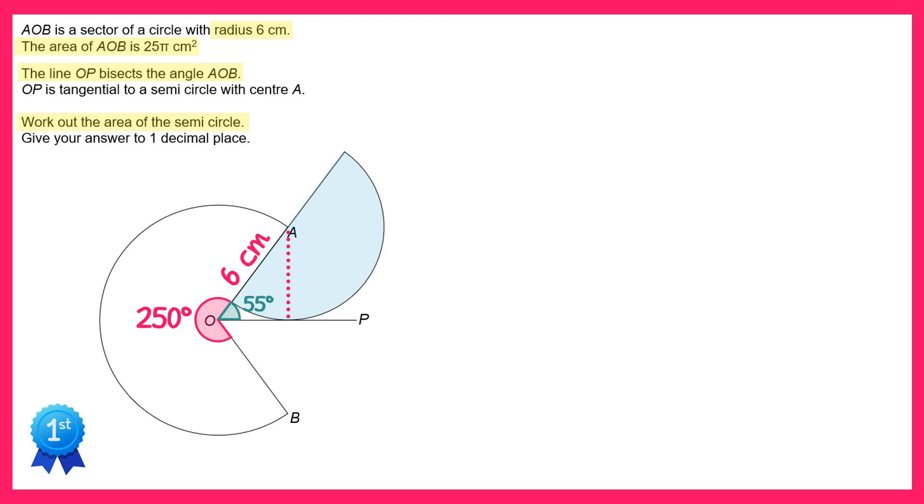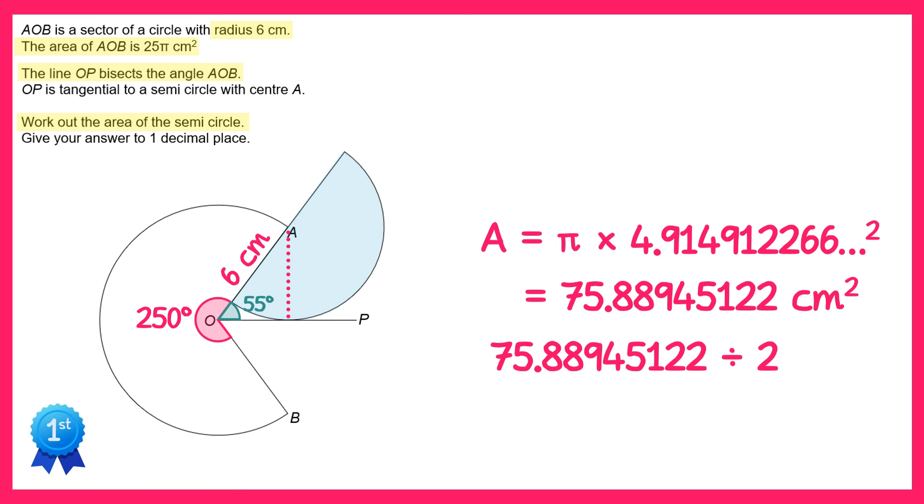So to find the area of the semicircle we'll use the formula area equals π times the radius squared, and this will give you 75.88945122, but that's the whole circle. We only want the semicircle so we divide this by 2, and the question asks for the answer to be to one decimal place, which gives you 37.9 centimeters squared. And that's your answer to the question.